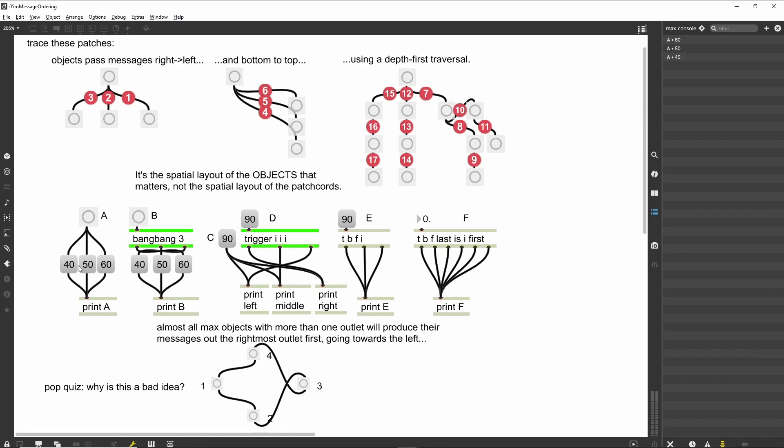The next patch shows a corrected version of this patch, using a new object, BangBang. This object takes an incoming message and produces bang messages from its outlets in right-to-left order. The number of outlets is determined by the argument to BangBang. The outlets are connected to the message boxes with crossed patch cords. When we click on button B, the Max console displays the messages in the preferred order. Notice that the outlets of BangBang fire in right-to-left order, mimicking the message ordering of branching patch cords.